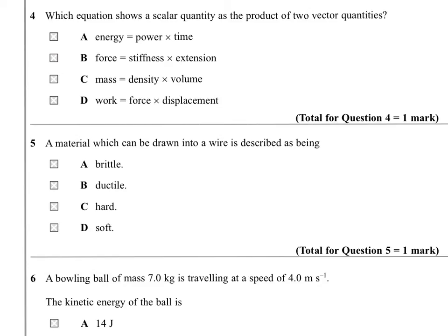Question 4. Which equation shows a scalar quantity as the product of two vector quantities? Well, work here is the prime example. Work often comes up, and energy often comes up, in attempts to identify that you recognise the difference between a scalar and a vector. Work is the product of force, which is a vector, and displacement, which is also a vector. But work itself is not a vector.